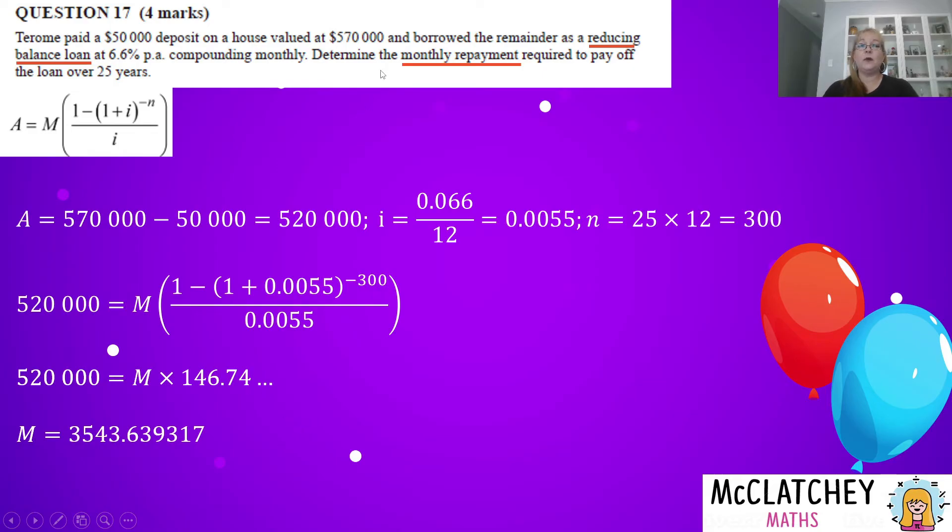So on my calculator, I've got this answer here. So I'm going to tell the calculator 520,000 divided by the answer, which gives me 3543.639317 and so on. Now, the thing is, the question is asking me to determine the monthly repayment. I'm dealing with money here. So I actually need to express that with the dollar sign and round it to two decimal places because money has two decimal places. So I'm going to round that three up to a four. The repayment is $3,543.64. And I'm going to get my final mark here for determining the monthly repayment because I rounded it correctly to two decimal places. If I hadn't done that properly, I wouldn't be getting the mark. So be very careful to express your final answer correctly.